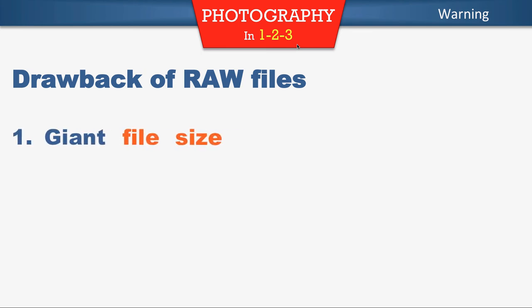Drawbacks of RAW files — anything that's good always has a negative. Giant file size. Typical JPEGs on a good DSLR are one to two megs in size, maybe up to five or six megs. You're going to get 10, 15, or 20 meg file sizes with RAW. It takes up a lot more room because you have a lot more data. Hard drive space is cheap these days, as are memory cards, so I recommend that shouldn't be a big issue. But do know that if you take a lot of photos and save them in RAW, it's going to take up space five to ten times faster — so that's something to consider.